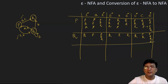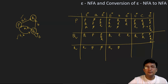Now let's compute the transition with symbol r. Epsilon closure of r is only r. r on a is undefined, and the epsilon closure of that will also be undefined. Similarly, r on b moves to no state, so this will also be phi. For symbol c, it is undefined, so epsilon closure of that will also be undefined.